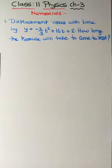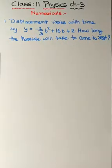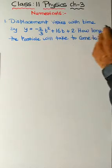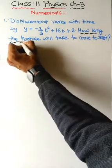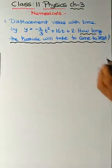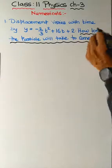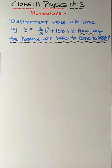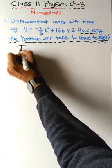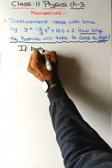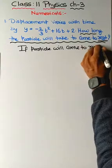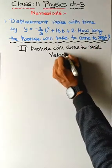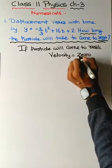The first question: displacement of a particle varies with time according to the equation y = -2/3 t² + 16t + 2. The question asks how long the particle will take to come to rest. 'Rest' is the keyword here, so we need to find time. The hint is that when the particle comes to rest, its velocity will become zero.